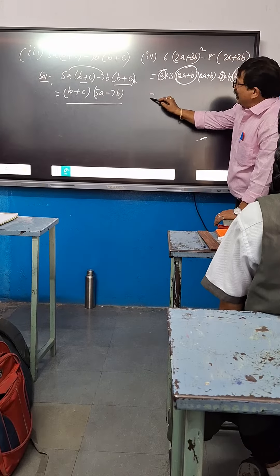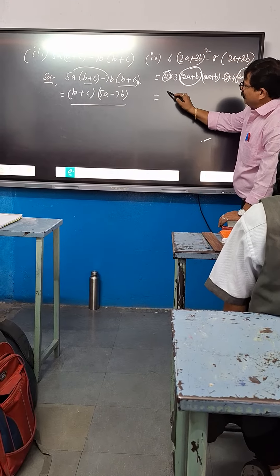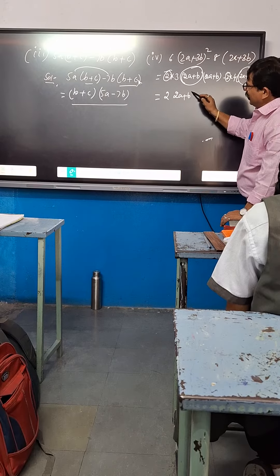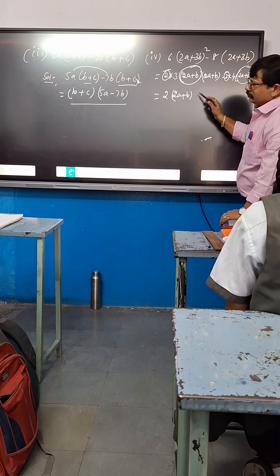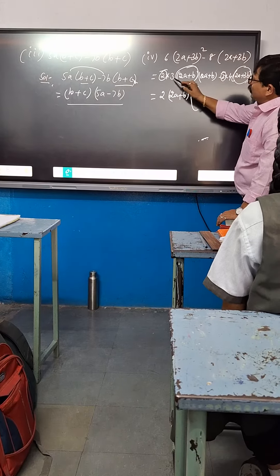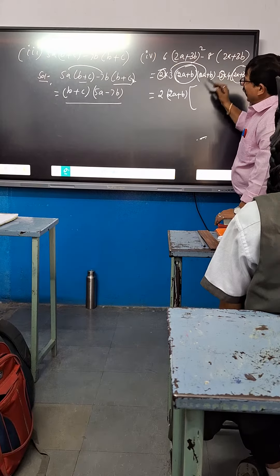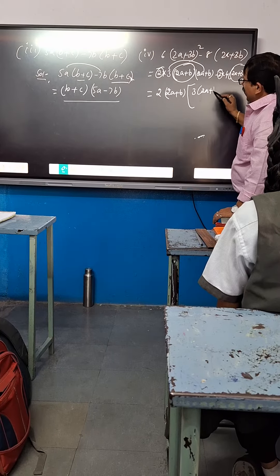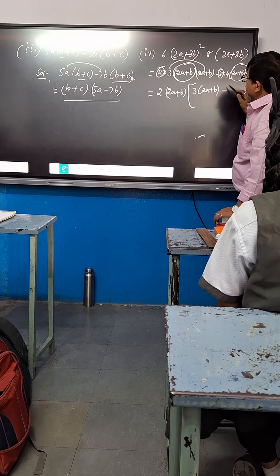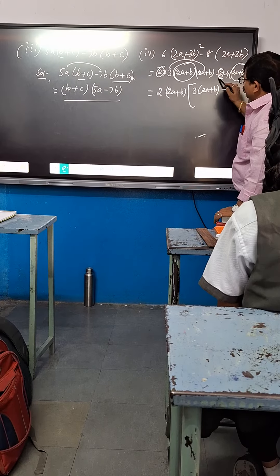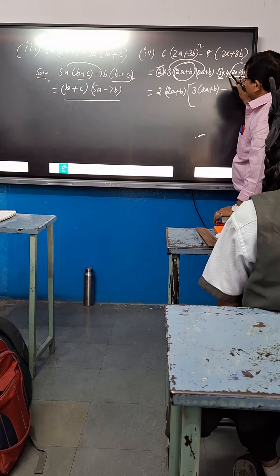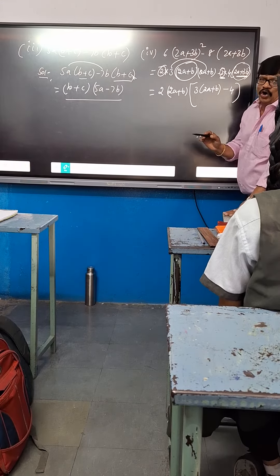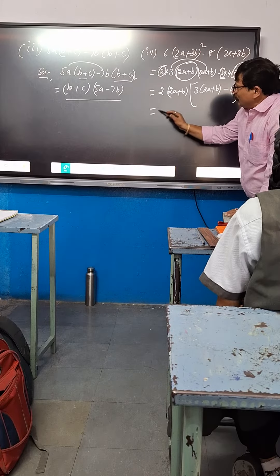Means what? 2 common, and 2A plus B common. Remaining here — which one? 3. 2A plus B there, 3. Minus. Already 2 common, this one also common. Remaining which one? 4. Only 4. Now you know.